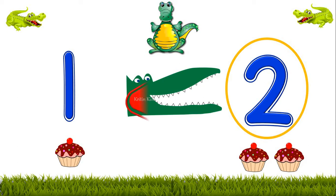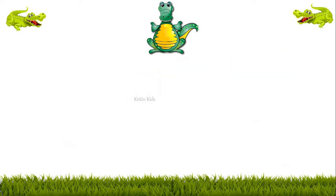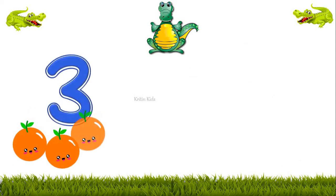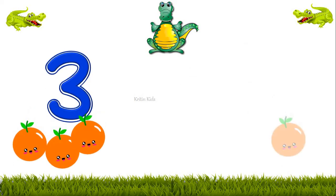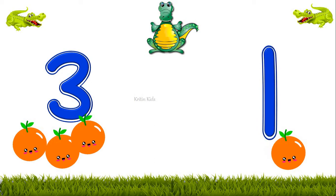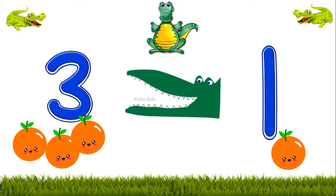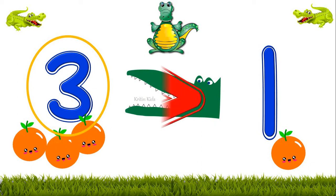Can you see this mouth of Ali is identical to this sign? Now let's take one more example. Here we have 3 oranges and here we have 1 orange. Ali is already ready to eat 3 oranges because 3 is bigger than 1. Can you see Ali's face is identical to this sign?